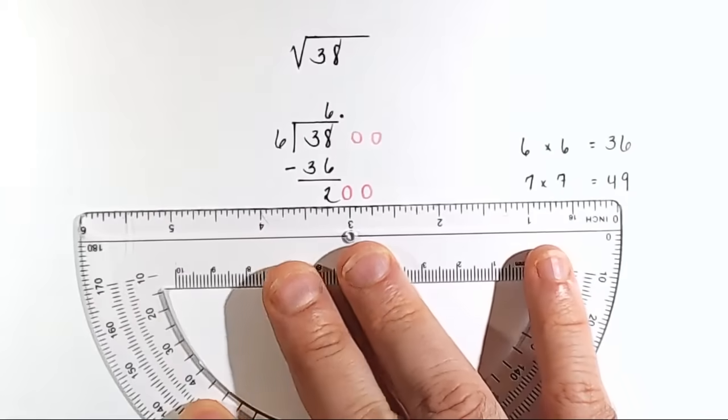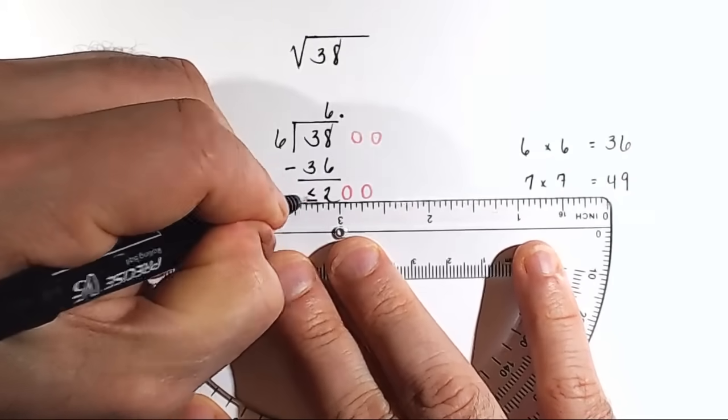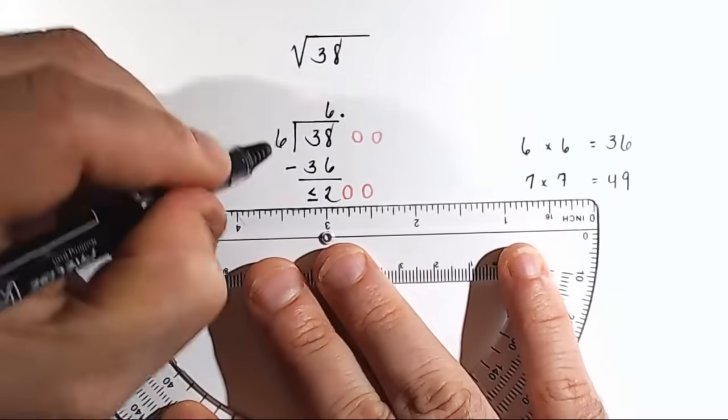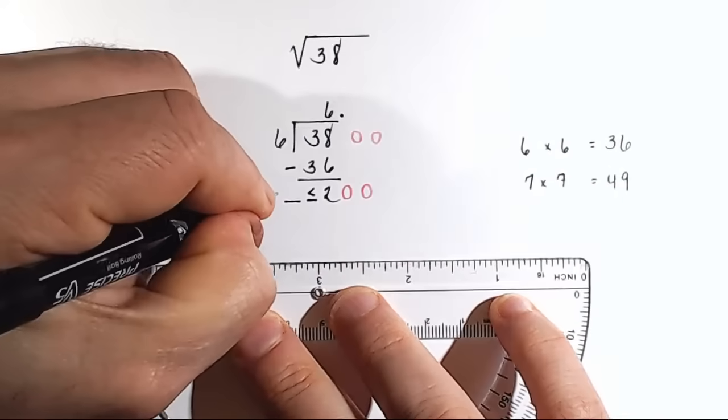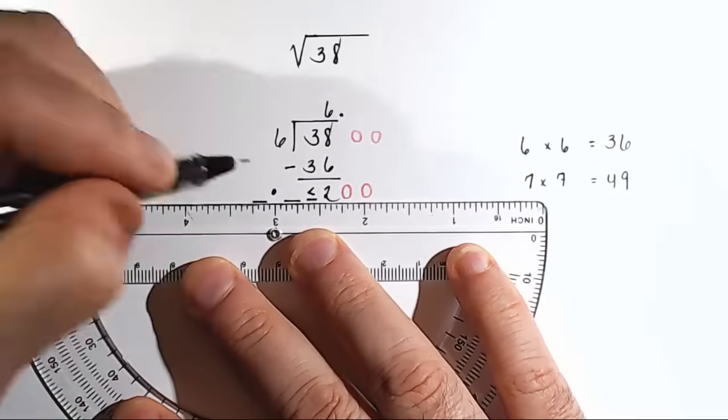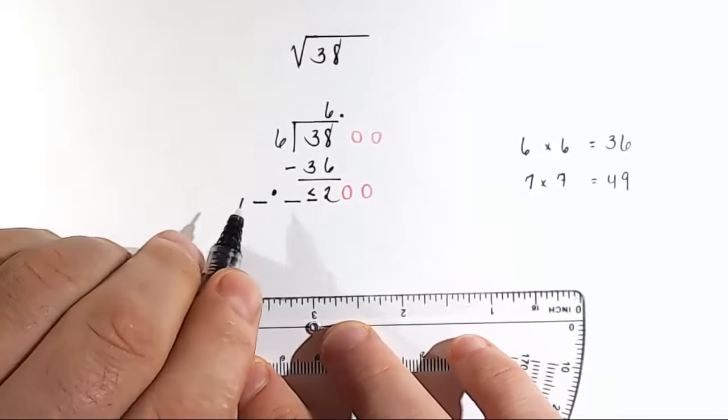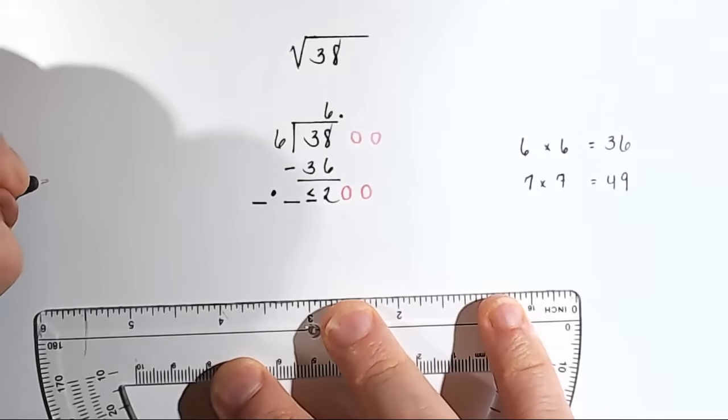Next to 200 down here, we will write a less than or equal to symbol. And to the left of that symbol, we'll put a line. To the left of that line, we'll put a multiplication symbol. To the left of that symbol, we'll put another line. And then right here in this space, we need to double 6.